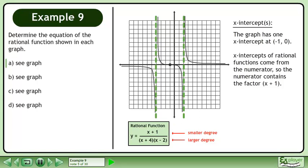The graph has one x-intercept at negative 1, 0. X-intercepts of rational functions come from the numerator, so the numerator contains the factor x plus 1.